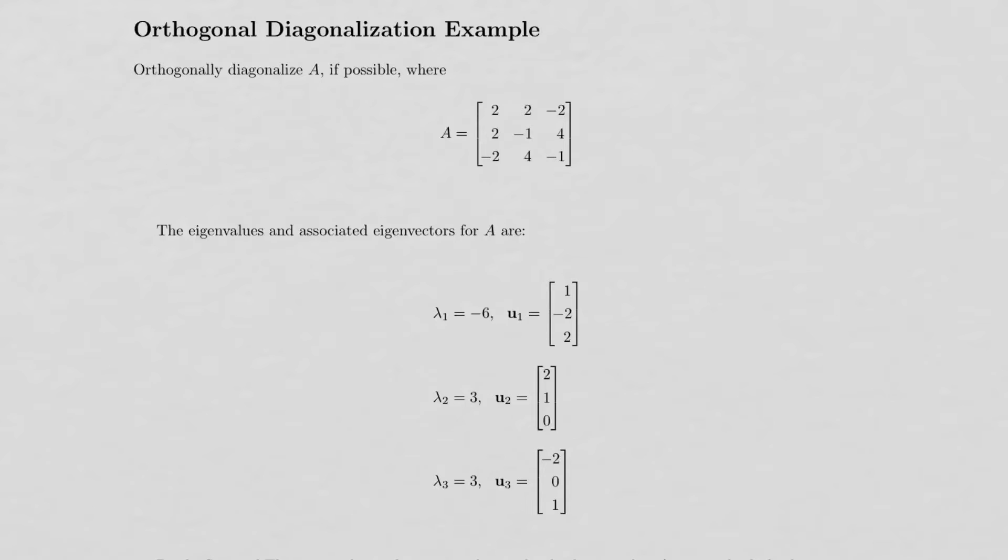Here's an example about how to orthogonally diagonalize a matrix. So we're given this matrix A here, and we're asked to orthogonally diagonalize it if possible.